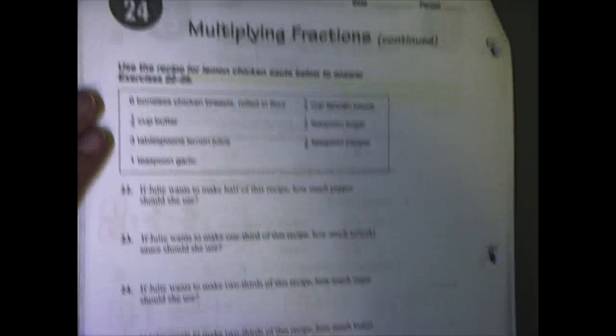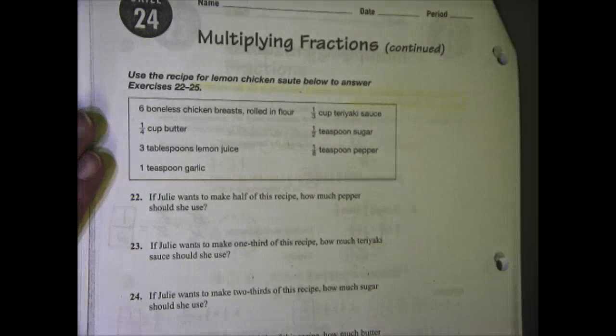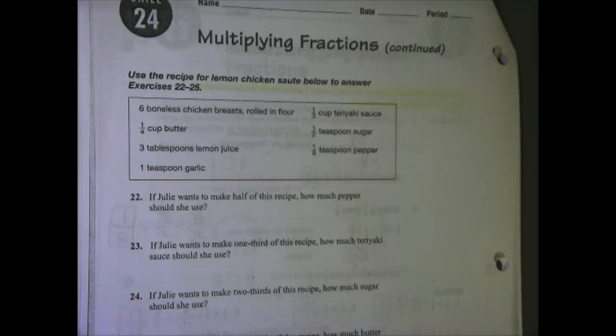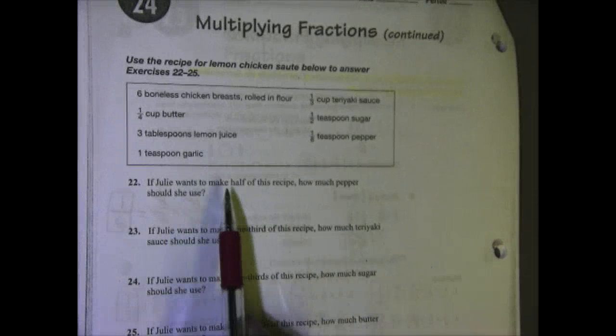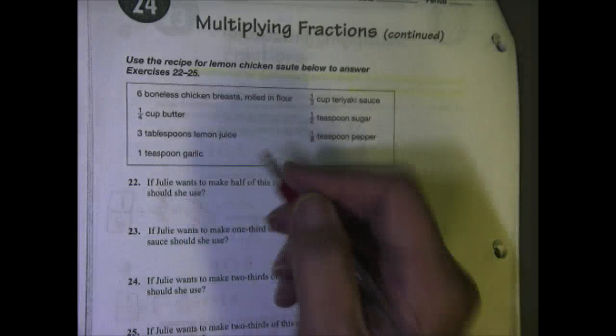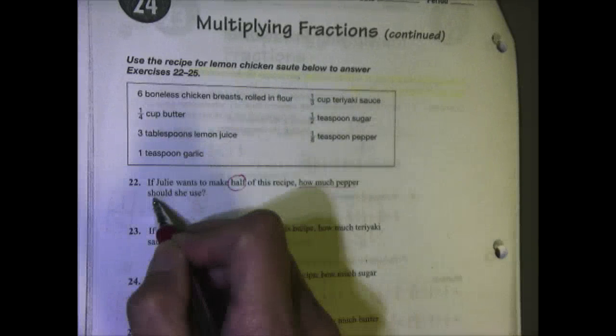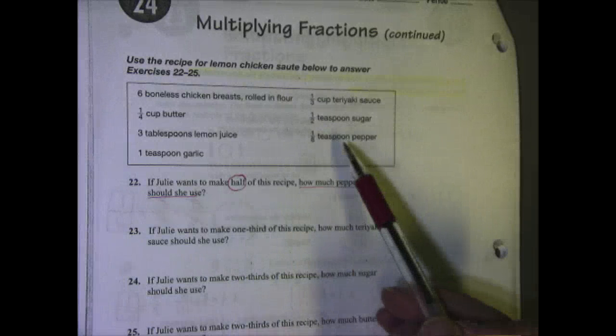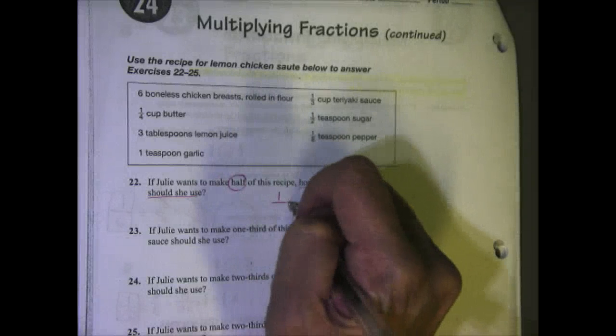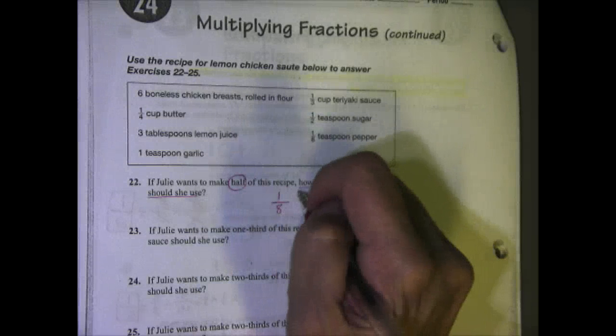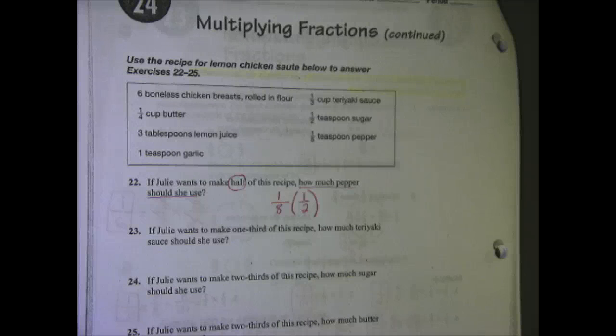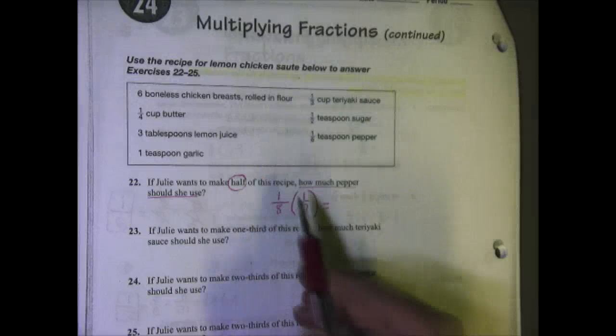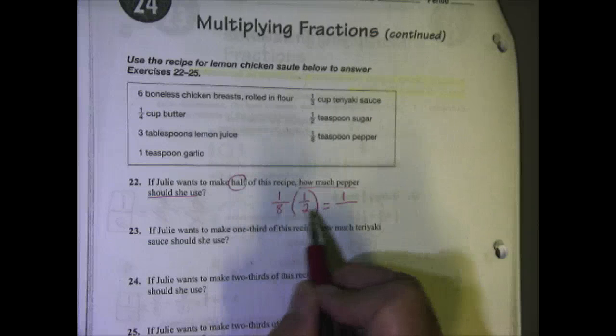We are still on skill number 24, but we are on the back side of the page, page 48. We're looking at a recipe. It says use the recipe for lemon chicken saute below to answer exercises 22 through 25. Number 22 says if Julie wants to make half of this recipe, how much pepper should she use? Circle the important parts: half, and how much pepper. If I go up for pepper, I see that pepper is 1/8 of a teaspoon. But if I only want to use one half of it, I'm going to multiply by 1/2. Now I know on the other side they use the multiplication symbol, but we try not to do that in pre-algebra. I can use parentheses or a dot between the two. I'm going to multiply straight across. The numerator is 1 times 1 is 1, the denominator is 8 times 2 is 16.